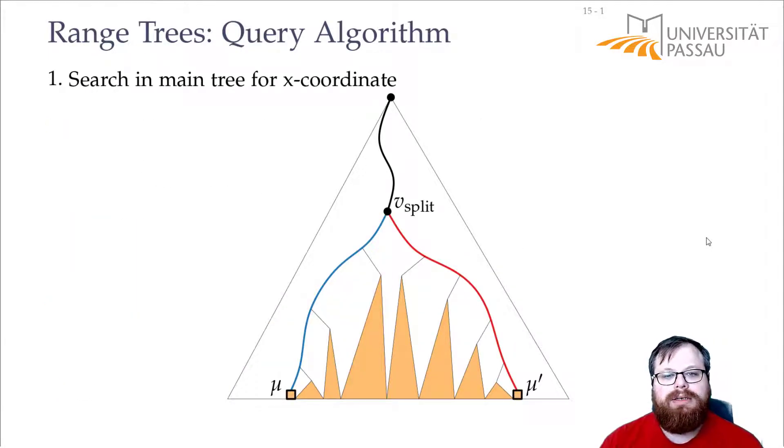So how could this look like here? We have again our v-split, we find what is the left boundary of the query rectangle, what is the right boundary, and we get these canonical sets.